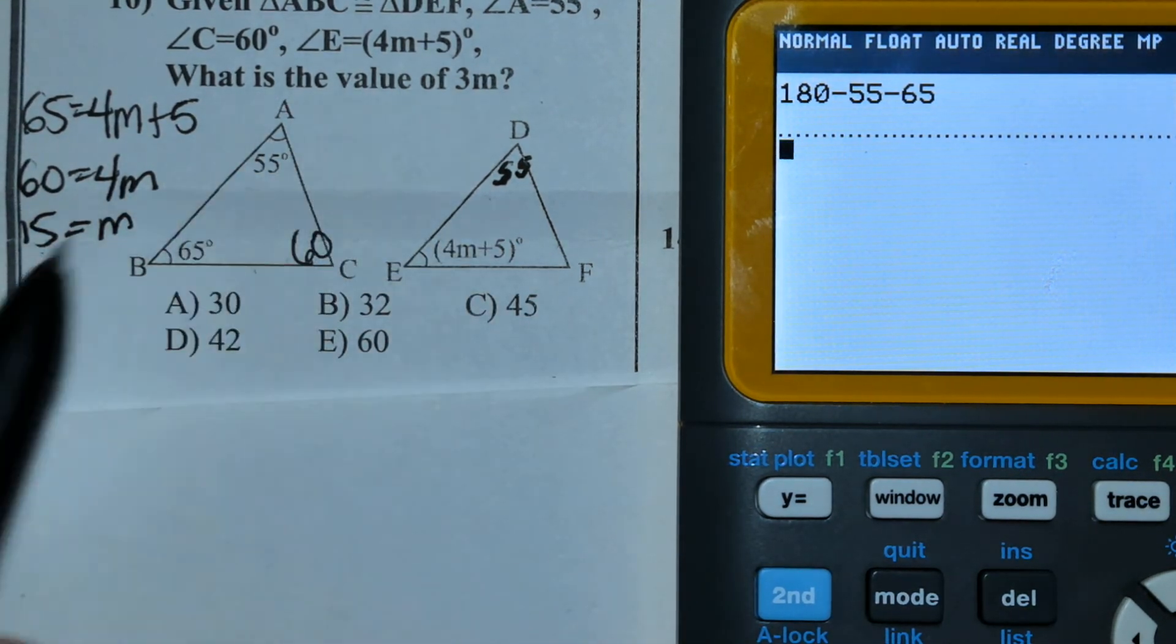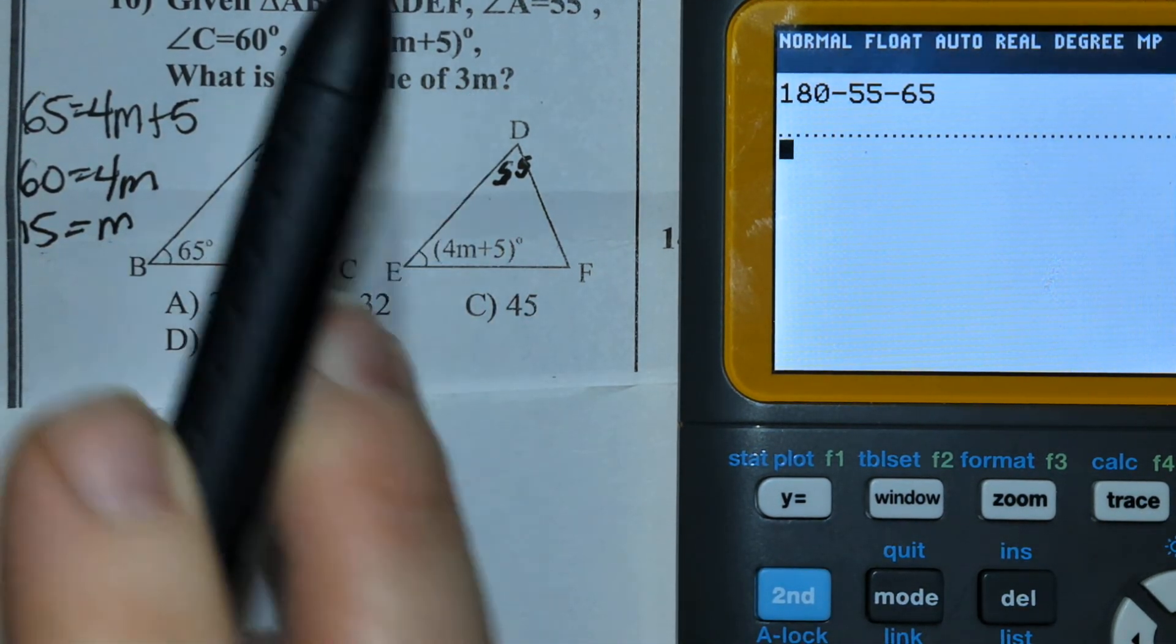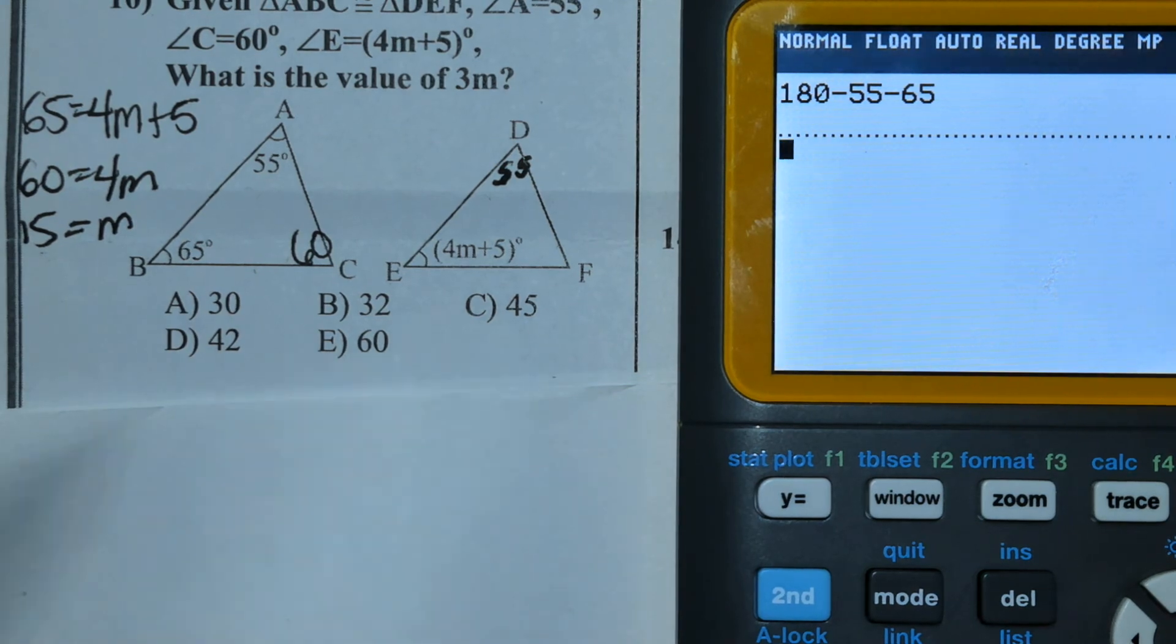The answer is not 15 - that's what M is. What is 3 times M? 3 times M is 45, option C.